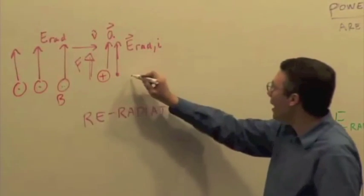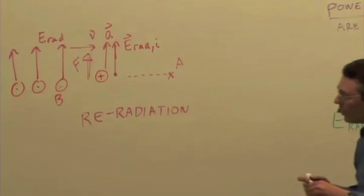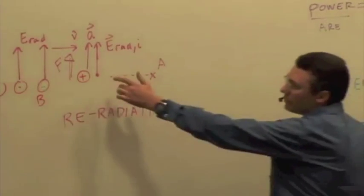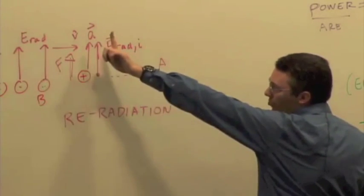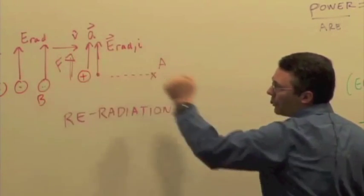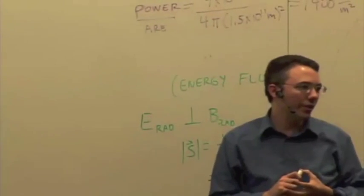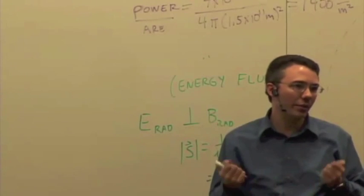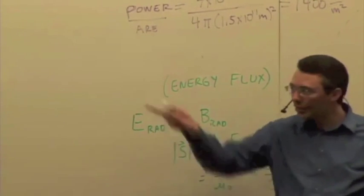And then I'm going to look somewhere down here at, say, location A. Well, at location A, A is upward. This is a positive charge. What's going to be the direction of the electric field due to the accelerated charge? What's going to be the direction of the re-radiative electric field when it reaches location A?